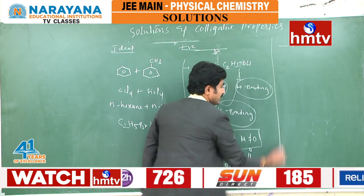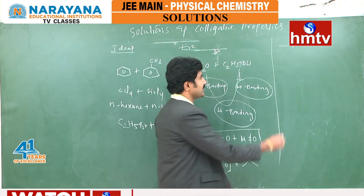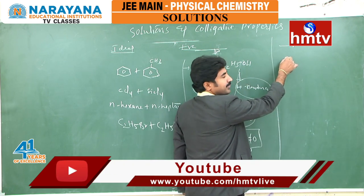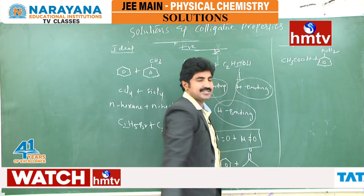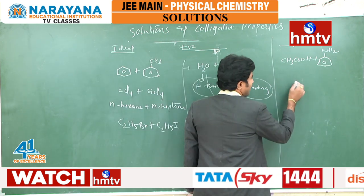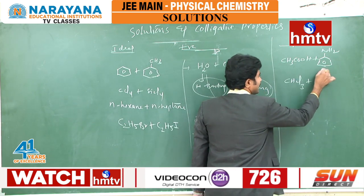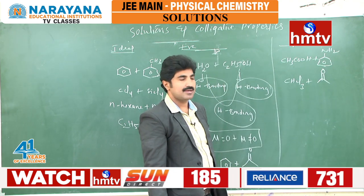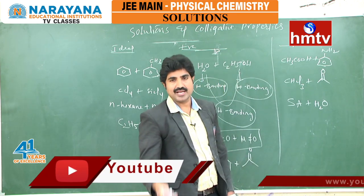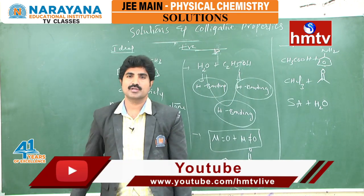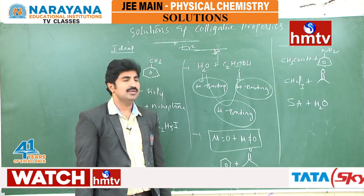Under negative deviation, based on the heat of neutralization, if delta H is negative, we can say negative deviation. Take any acid-base combination — for example, acetic acid and aniline. Acetic acid is an acid, aniline is a base. By using stronger hydrogen bonding, we can understand chloroform (CHCl3) plus acetone — between these two hydrogen bonding arises, so it comes under negative deviation. Also any strong acid plus water combination such as HCl plus water, HNO3 plus water, H2SO4 plus water, or HClO4 plus water also falls under negative deviation.